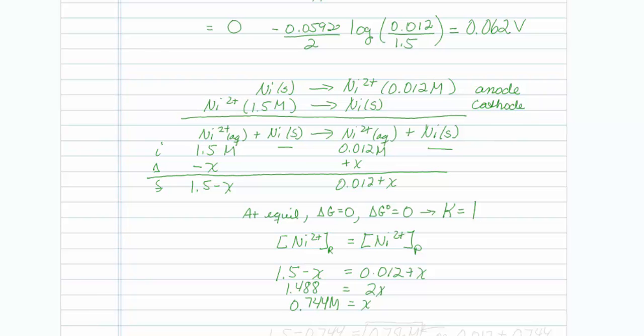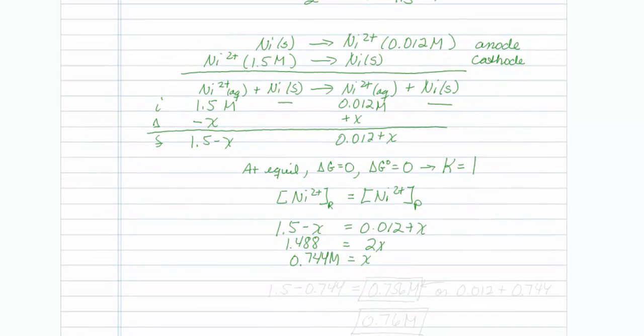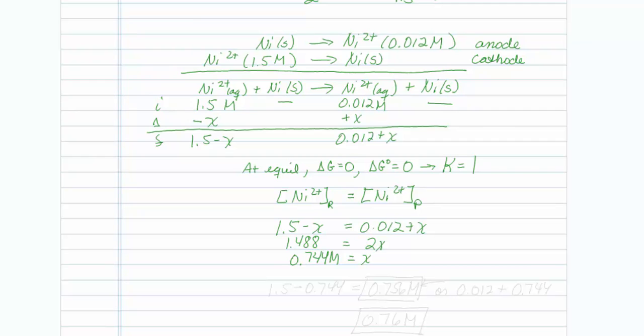Now remember, I've only just solved for x. If I actually want my equilibrium concentrations, I have to take 1.5 minus 0.744, which is equal to 0.756 molar, or the other thing I could do is take 0.012 plus 0.744, and guess what I would get? So I think just 2 sig figs, I would probably put that in as 0.76 molar. That's how you do that one.